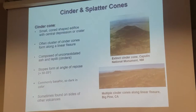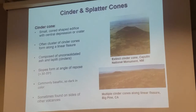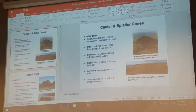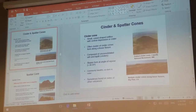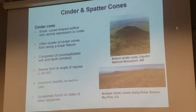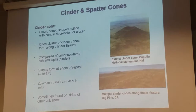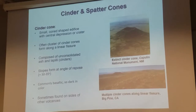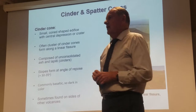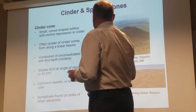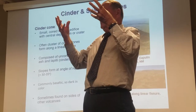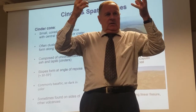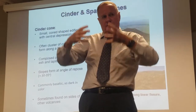Cinder and spatter — that should be spatter. So spatter cones and cinder cones basically differ only in the eye of the beholder. The big difference is you can think of a cinder cone as basically a collection of loose material that falls down right next to the vent. The key is that when the material falls down and hits the ground, it's already solidified.